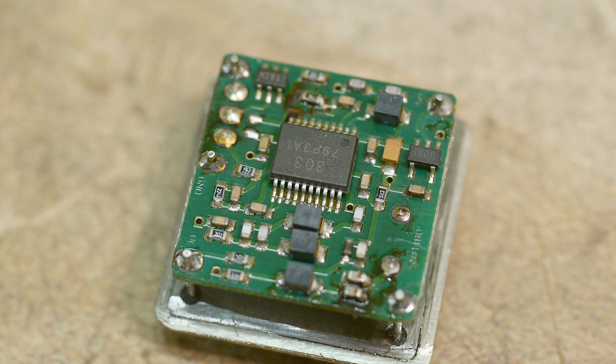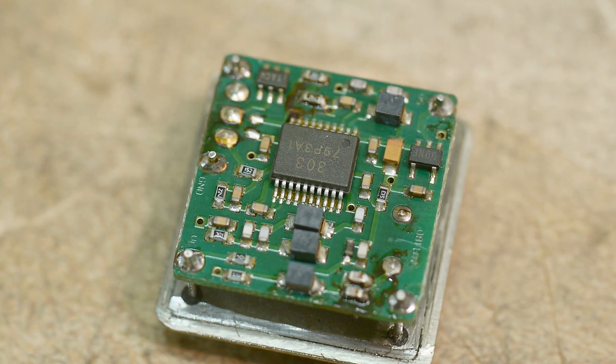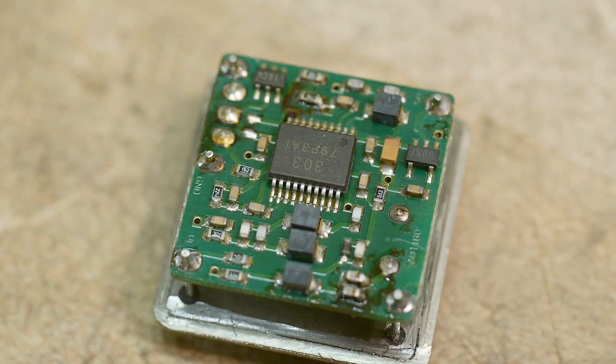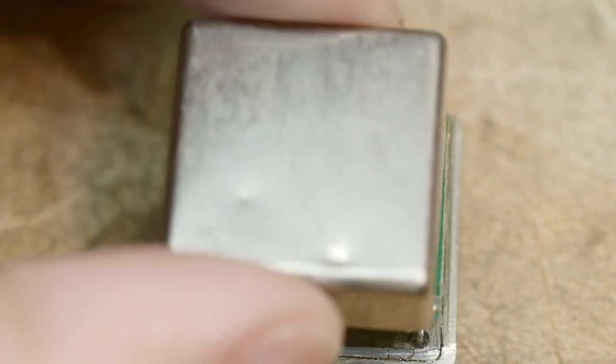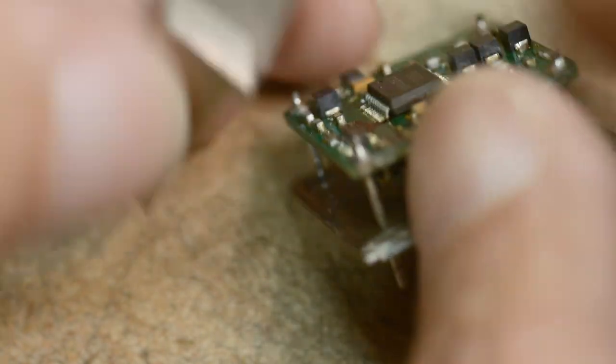And then a bunch of other circuitry on there to make the oscillator work, and probably also temperature-controlled loop on the oscillator—temperature compensation I should say—and then a temperature-controlled loop on the oven.